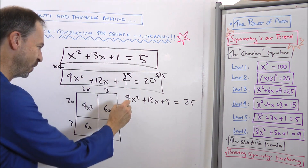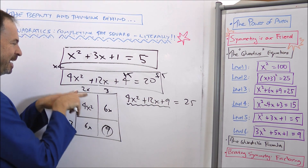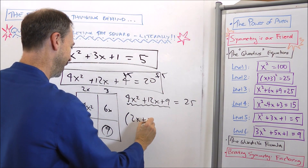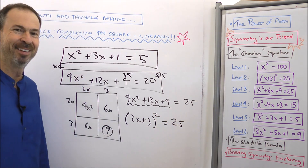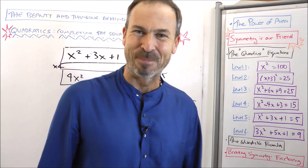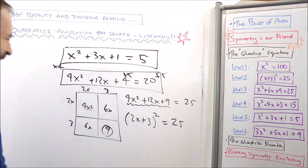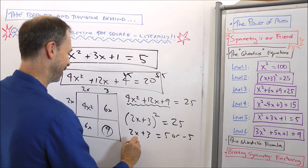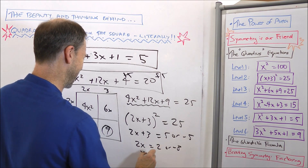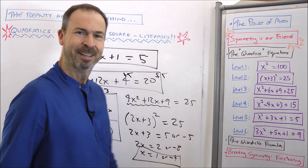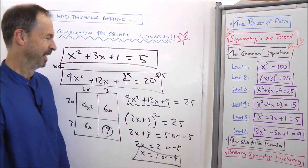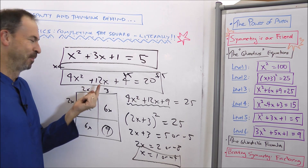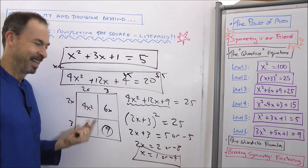Now why did I go through all this work? Because 4x squared plus 12x plus 9 is a 2x plus 3 by 2x plus 3 square. 2x plus 3 squared must have area 25, and I'm back to level 2. So 2x plus 3 must be 5 or negative 5. So 2x must be 2 or negative 8, so x must be 1 or negative 4. Multiplying by 4 saved the day — an even middle term gave us a nice square quantity at the beginning, and life was golden thereafter.